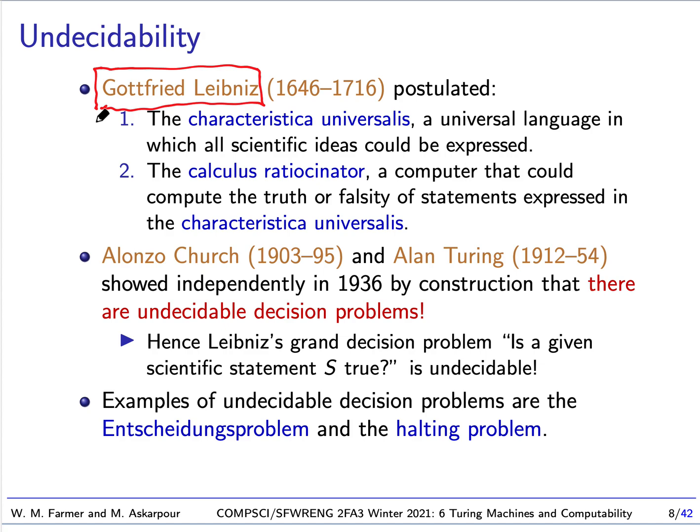Leibniz was very interested in computation. He designed a mechanical calculator called the Stepped Reckoner (Staffelwalze), which was able to do addition, subtraction, multiplication, division, and take square roots — no one had ever created such a machine before. So Leibniz was one of the first great computer engineers. Leibniz was fascinated with computation and entertained the idea that we can solve many problems with computation, perhaps computing answers to any question.